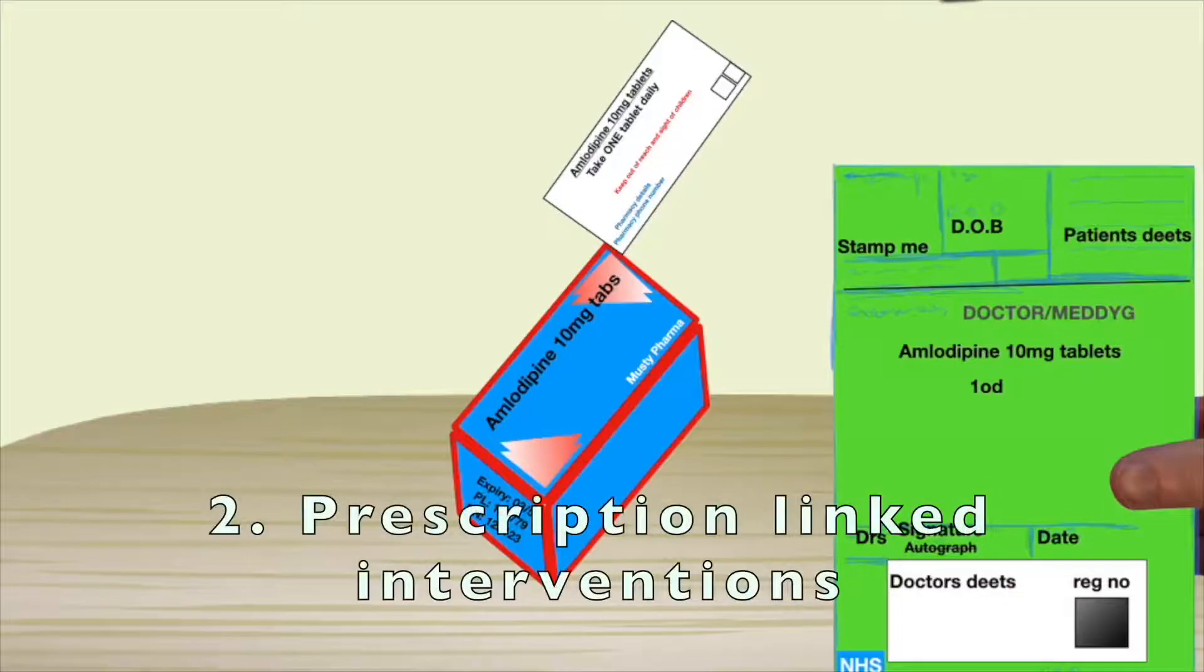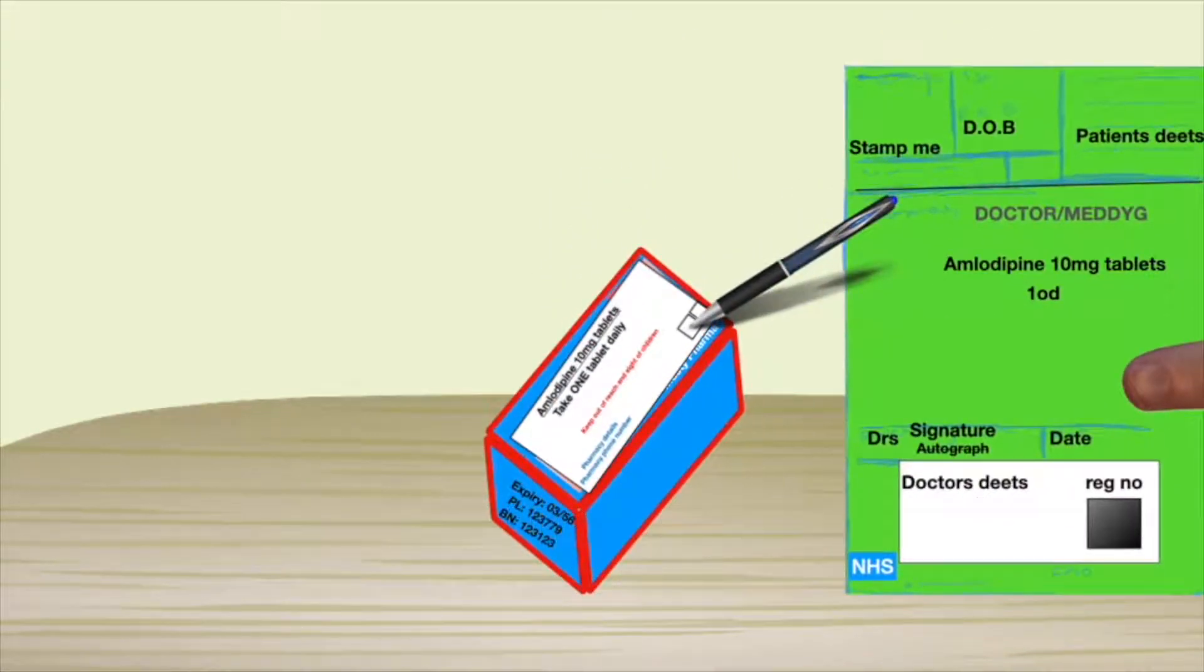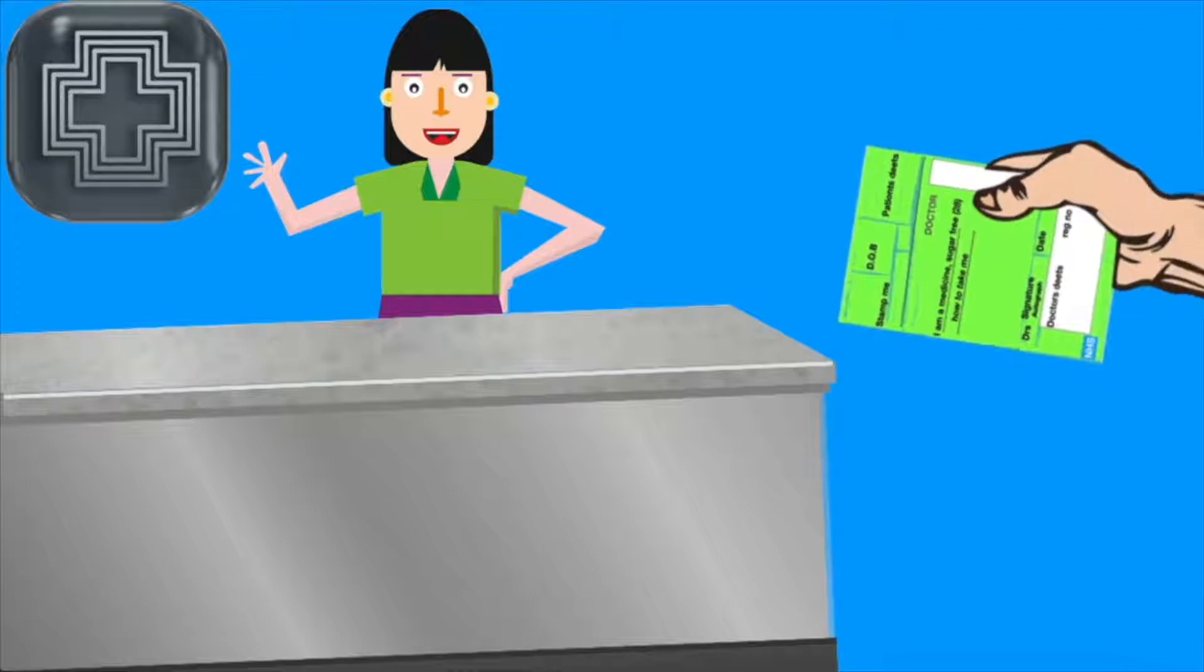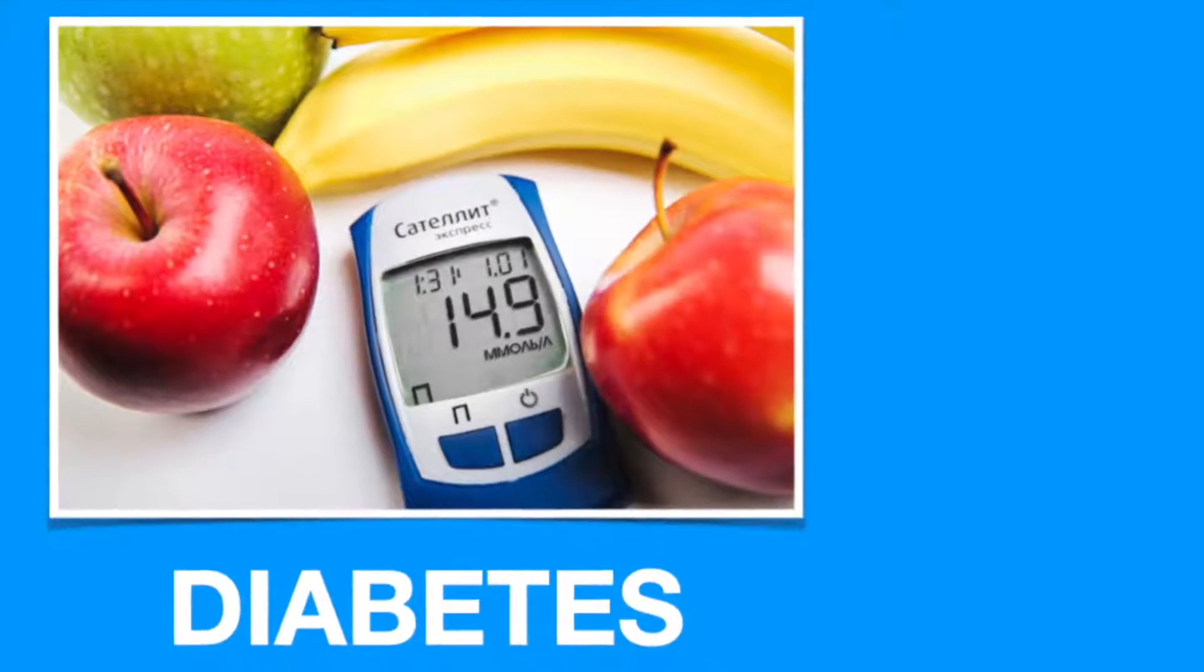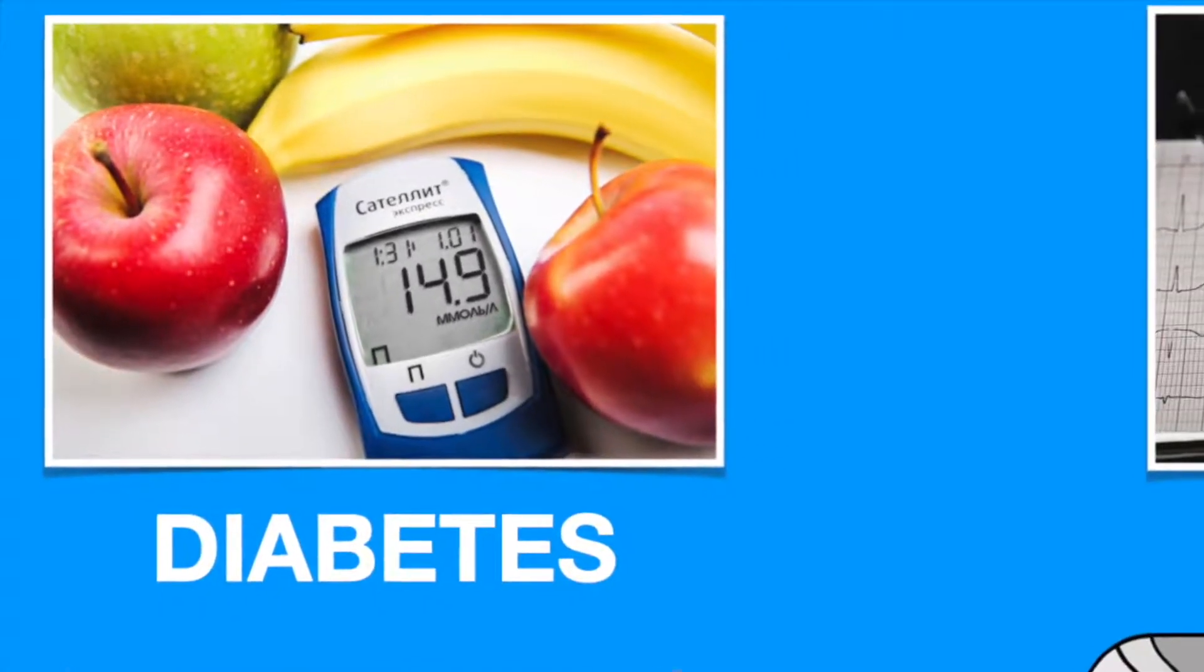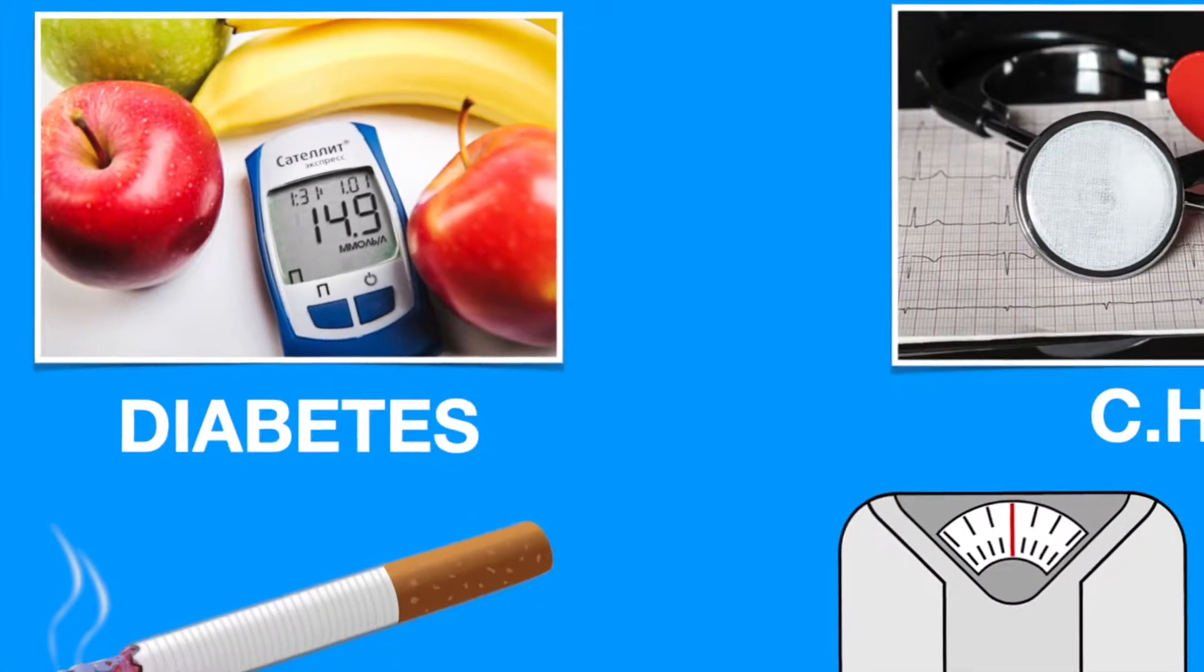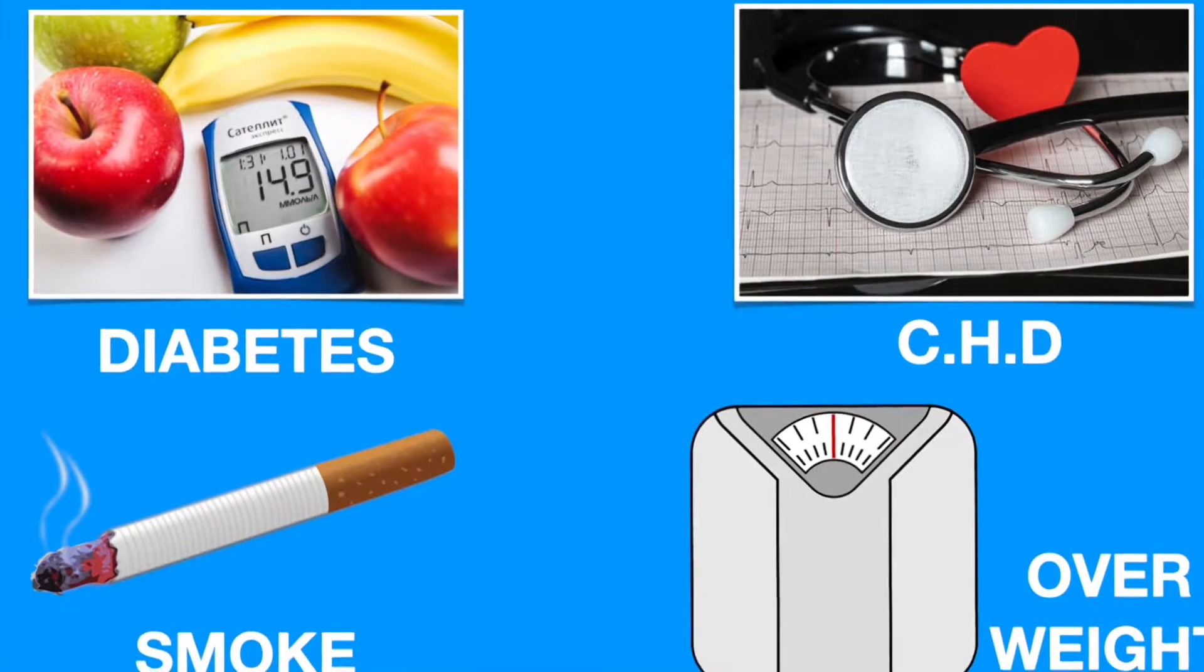Number two: prescription-linked interventions. The other way pharmacies are encouraged to promote healthy lifestyles is from the people and the prescriptions they present with. They can get an idea of patients in particular risk groups, such as those who have diabetes, are at risk of coronary heart disease, those who smoke, and those who are overweight.